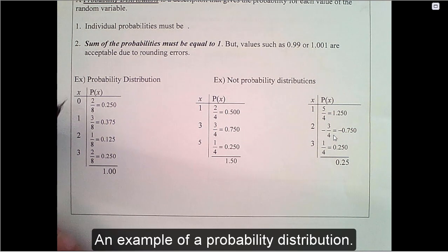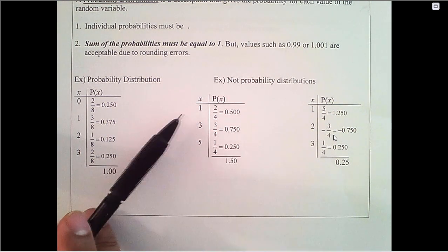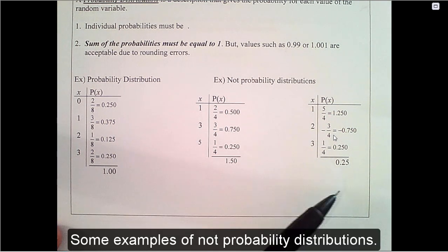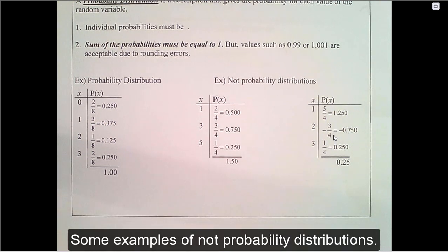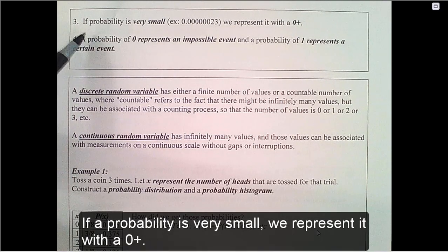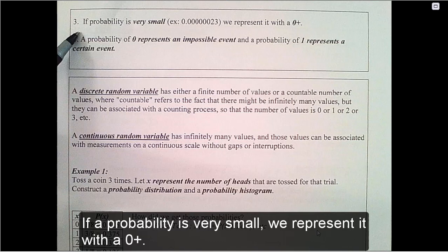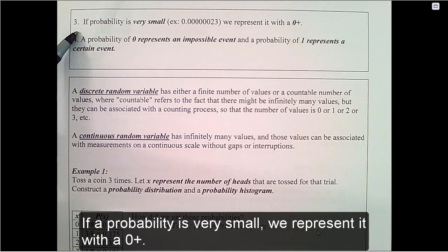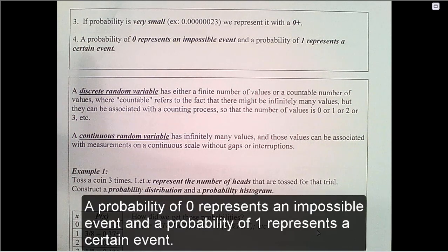An example of a probability distribution. Some examples of not probability distributions. If a probability is very small, we represent it with a 0+. A probability of 0 represents an impossible event, and a probability of 1 represents a certain event.